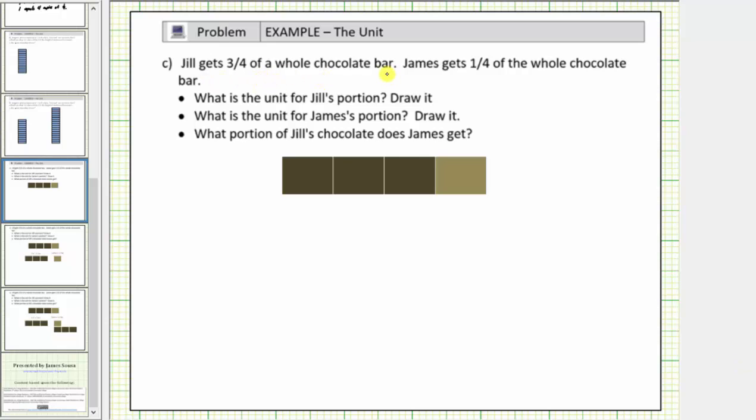Jill gets three-fourths of a whole chocolate bar. James gets one-fourth of the whole chocolate bar. So if this is the model of the chocolate bar, Jill receives three-fourths of the bar, which would be this amount. James receives one-fourth of the bar, which would be this amount.